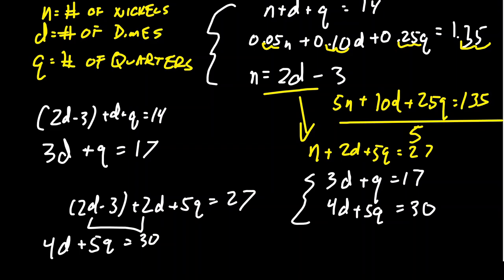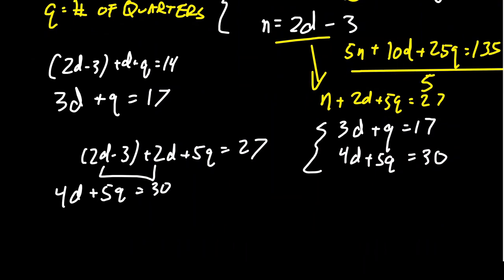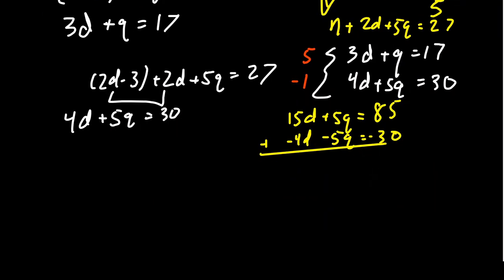Now we want to solve this system. We can do this by substitution, but I'm going to switch to elimination. I'm going to multiply the bottom equation by negative 1 and the top equation by 5. We end up with 15d plus 5q equals 85, and minus 4d minus 5q equals minus 30. Adding these together, 11d equals 55, so d equals 5.